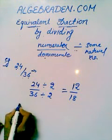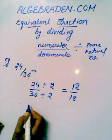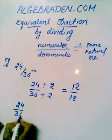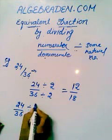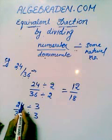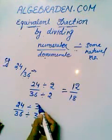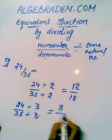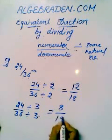And again, to find another equivalent fraction, we divide it by 3. We divide the numerator as well as the denominator by the same natural number. It will give us 8 and 12.